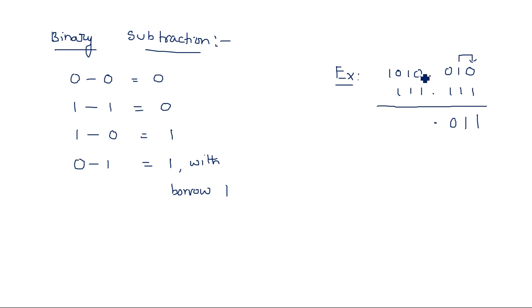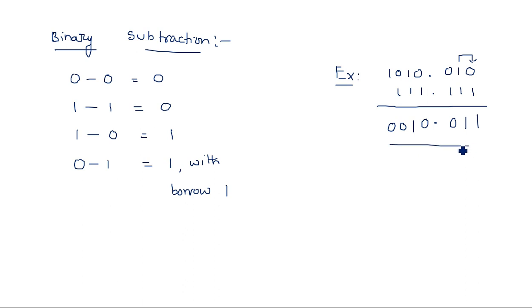Moving left: 0 minus 1 again — since we already gave a borrow in the previous case, it becomes 1 minus 1 which is 0. Then 1 minus 1, but this 1 was already given as borrow, so 0 minus 1 gives 1 with borrow 1, and the final digit: 1 minus 1 is 0. When doing binary subtraction, carefully track where each borrow is propagating.